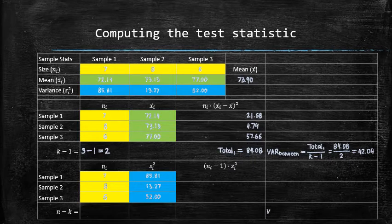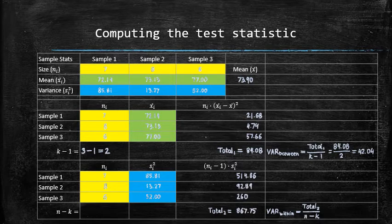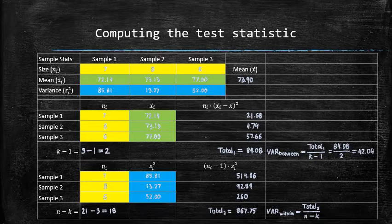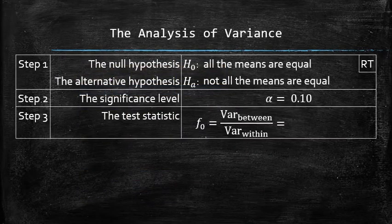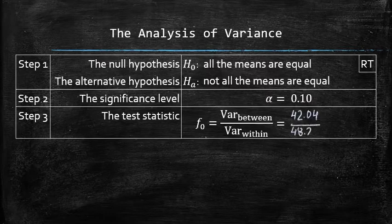The variation within the samples will be computed using the following formula. To find the total, we multiply the variances by the sample size minus one and add them together. To find the denominator, we subtract k, the number of samples, from n, the number of observations altogether, to get 18. So the variation within the samples is equal to 867.75 divided by 18, which is 48.21. The table summarizes all the computations necessary to compute the test statistic F0, which follows the F distribution with 2 degrees of freedom in the numerator and 18 degrees of freedom in the denominator. The test statistic F0 is the ratio of the variance between the samples and the variance within the samples, which is equal to 0.872. Step 3 is complete.